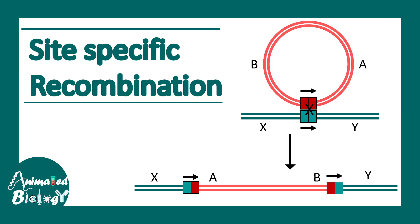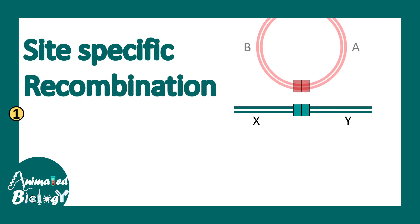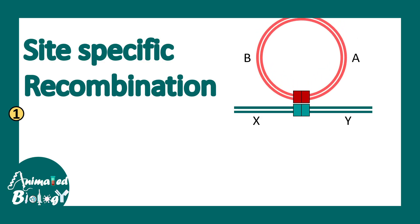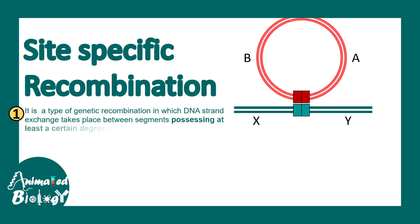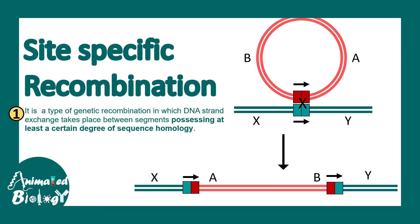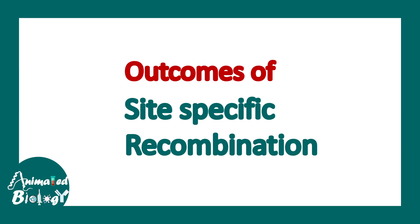In this video we'll talk about site-specific recombination. As the name suggests, the site or a specific part of the DNA is crucial for these recombination reactions. Just like any other recombination reaction, it needs a certain degree of homology between two sequences, but unlike other recombination reactions, these are site-directed and the orientation of the sites matters. It leads to integration of a DNA fragment into a target sequence. Site-specific recombination is highly specific, fast, and efficient.